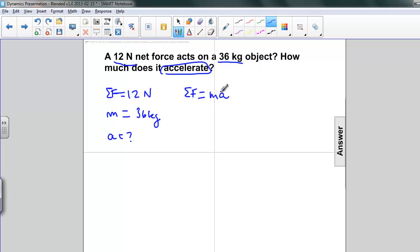But we're interested in acceleration, so we're going to rearrange this expression. We're going to divide both sides by m. So we get the net force divided by m is equal to mA divided by m. The m's cancel,